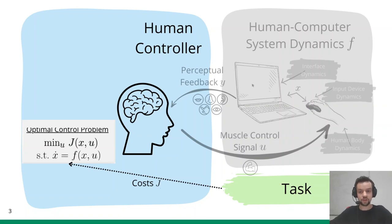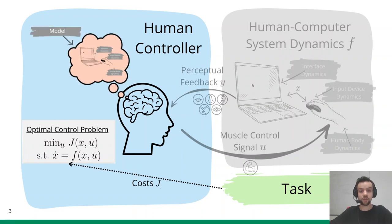This cost function is minimized with respect to the constraints imposed by the human-computer system dynamics. That is, we use the dynamics F to predict how muscle controls U change the world state X, on which the cost J might depend. Conceptually, this requires access of the human controller to an internal model of the system dynamics, which, in general, can be inaccurate or incorrect.